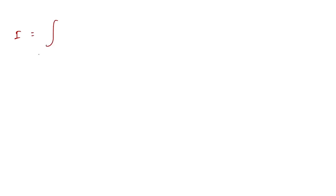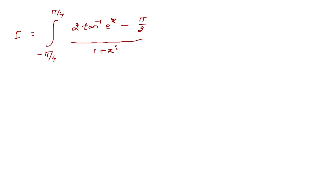Our problem is I equals the integral from minus pi by 4 to pi by 4 of tan inverse e to the power x, minus pi by 2, upon 1 plus x squared, dx. First, this is of the form integral from minus a to a of f(x) dx. We check whether the function is even or odd using f(minus x) equals f(x) or f(minus x) equals minus f(x) respectively.